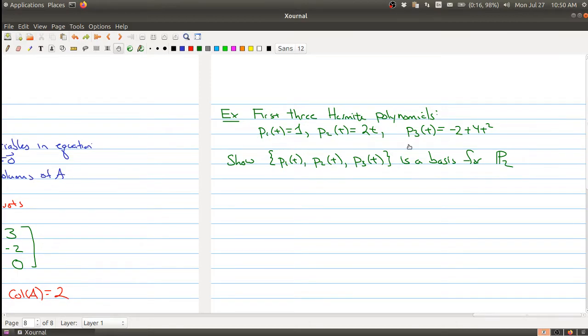So there's a Hermite polynomial p4 and if you throw that in you get a basis for p3 and so on. But instead what I'm going to just do is show that the first Hermite polynomials form a basis for p2. And what we want to do is take advantage of the fact that we know the dimension of p2.